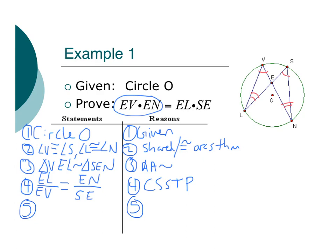Step five. Time for that prove statement. So, we have E, V times E, N equals E, L times S, E. We've got the means-extremes product theorem. Oh, yeah. Ain't nothing to but to do it.